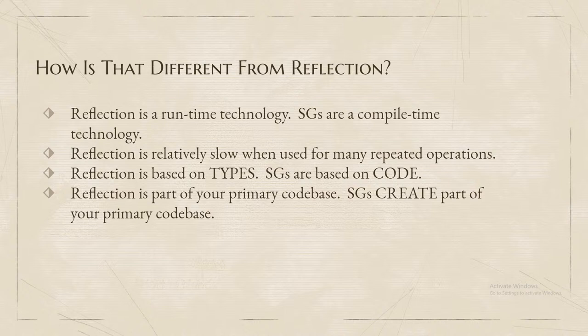Reflection is based on types, and source generators are not. Source generators get an instance of a representation of your code — not just the types. You can get the types out of it, but you can also get the variable names, string literals, comments, and everything that's in there. Reflection is only based on types. Reflection is part of your primary code base — the code you actually type in Visual Studio. Source generators create part of your primary code base, but the source generators themselves are not necessarily part of your primary code base. They are in your projects, but their purpose is to be a development tool rather than part of your program.